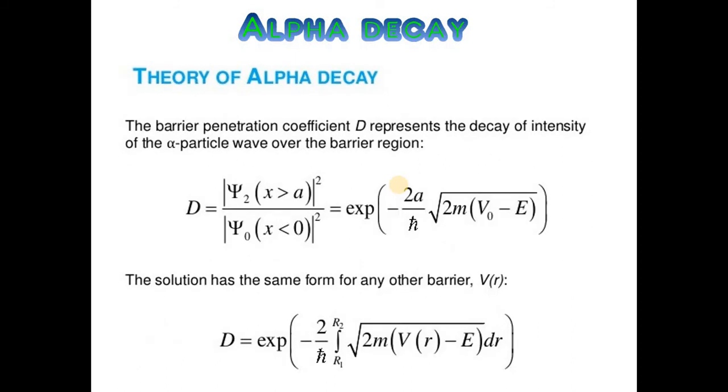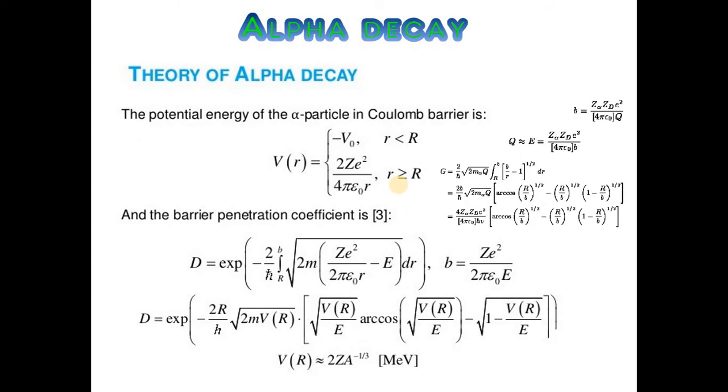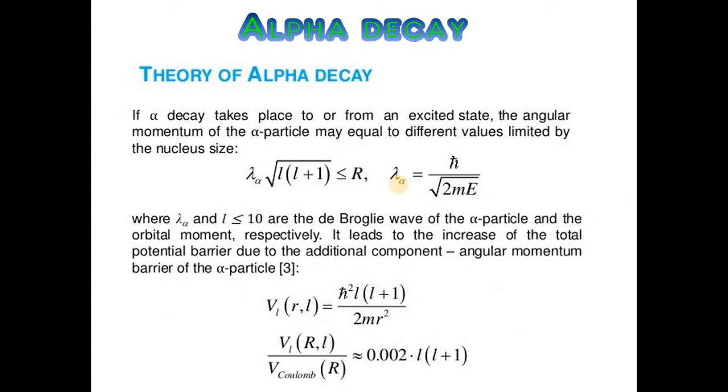The barrier penetration coefficient D represents the decay of intensity of the alpha particle's wave over the barrier region. The solution has the same form for any other barrier. The potential energy of the alpha particle in the Coulomb barrier is given by the relationship, and the barrier penetration coefficient is given.